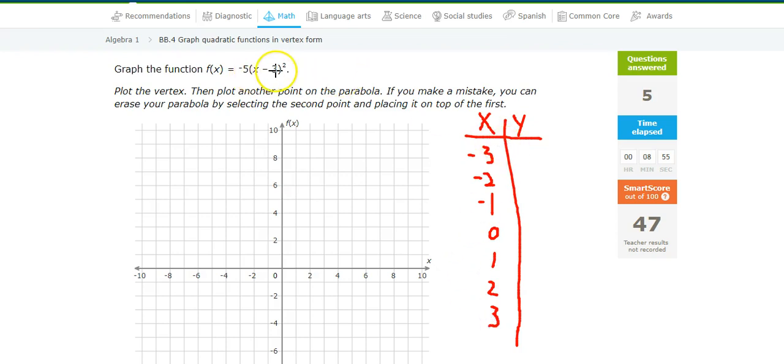Negative 3. Negative 3 minus 3 is negative 6 squared is 36, times 5. That's huge. It's not even going to fit on the graph. Negative 2 minus 3 is 5. 5 squared is 25. Not even going to fit on the graph. Negative 1 minus 3 is negative 4. Squared is 16. Not even going to fit on the graph.